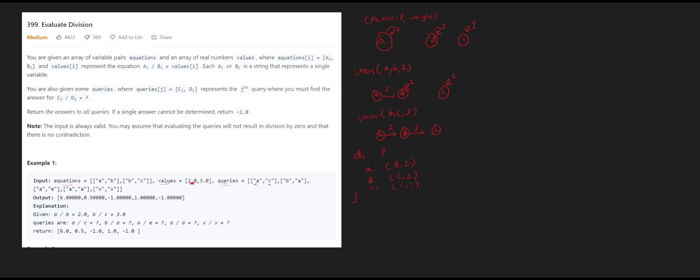Now we want to process the queries array and figure out how to get A over C, B over A, A over E, A over A, and X over X. We can actually filter out a couple of these. X over X — X is not even in the dictionary, so we simply return negative 1. For A over A, since it's over itself, we know that's going to be 1. And A over E — E is not in the dictionary, so we do negative 1 as well. For B over A and A over C, this is where we're going to use the find method.